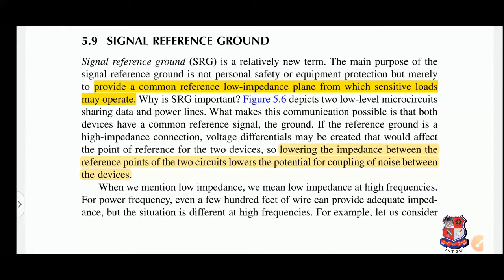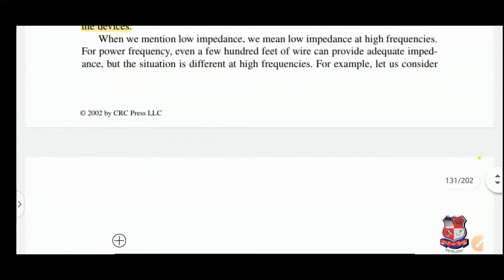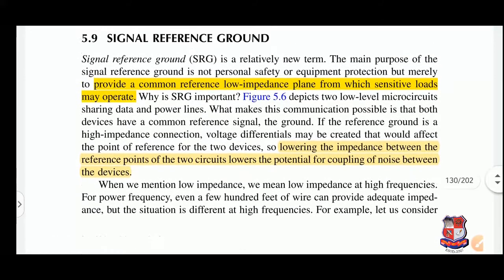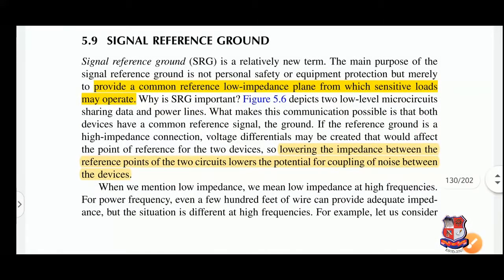If the reference ground is a high-impedance connection, a voltage difference may be created that would affect the reference point for the two devices. With high impedance, a small amount of current will create a voltage drop, causing a problem in communication. Lowering the impedance between the reference points of the two circuits lowers the potential for coupling of noise between devices. Noise refers to any unwanted signal that comes along with our data.